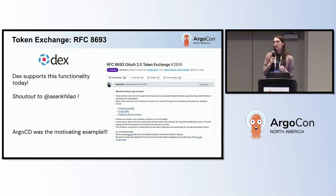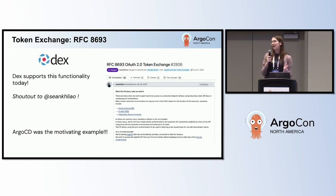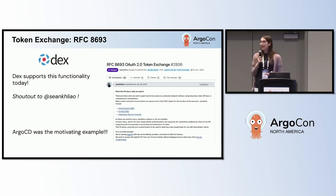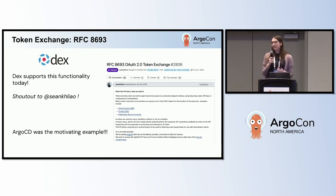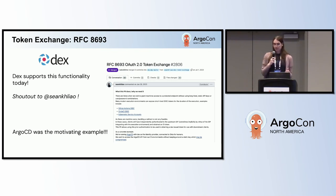But Argo CD probably isn't set up to trust our CI system because it's probably configured for authentication from human users. So by doing token exchange with your IDP — in our case DEX, but this would work in other IDPs that support it as well — you can exchange tokens.